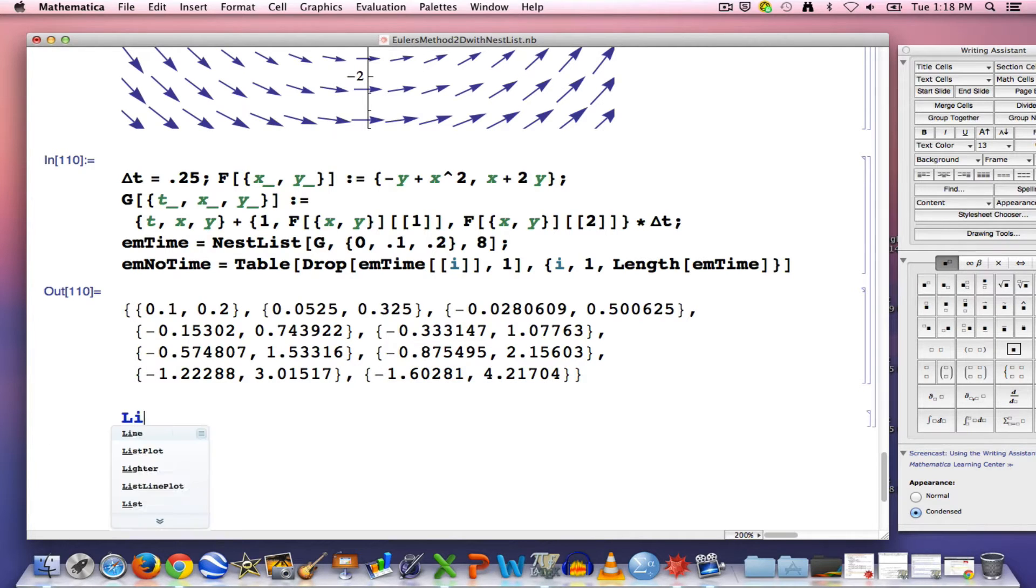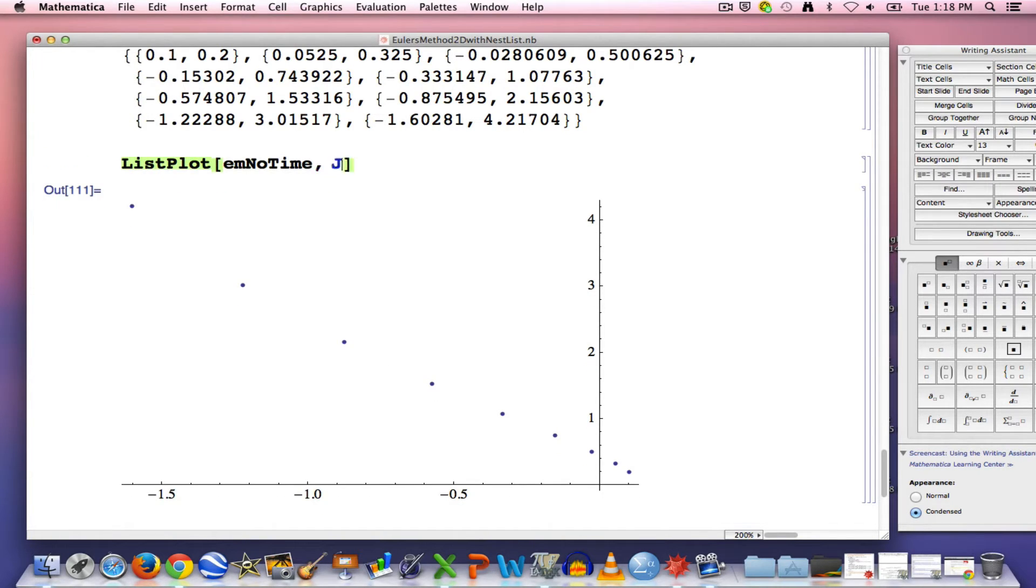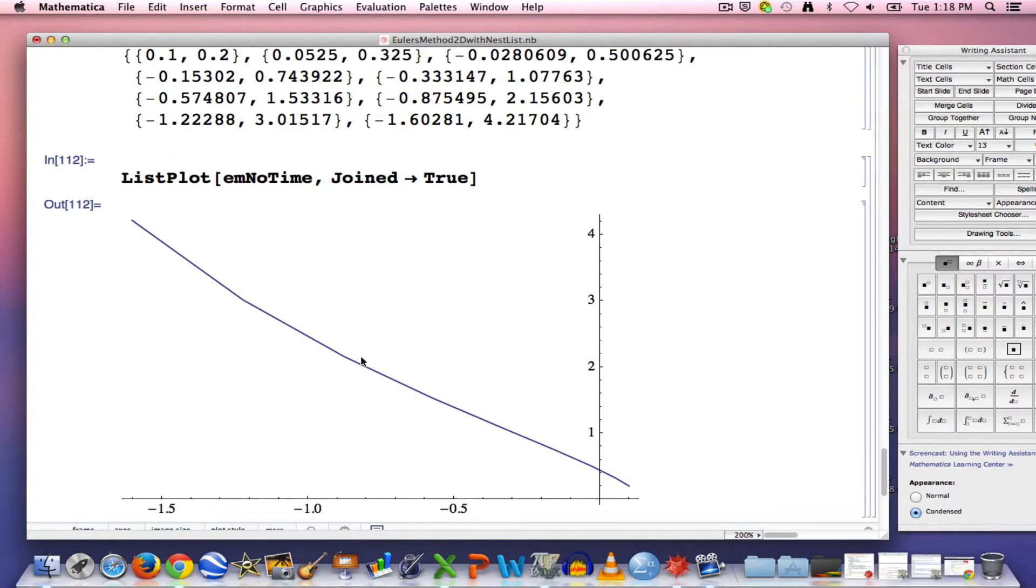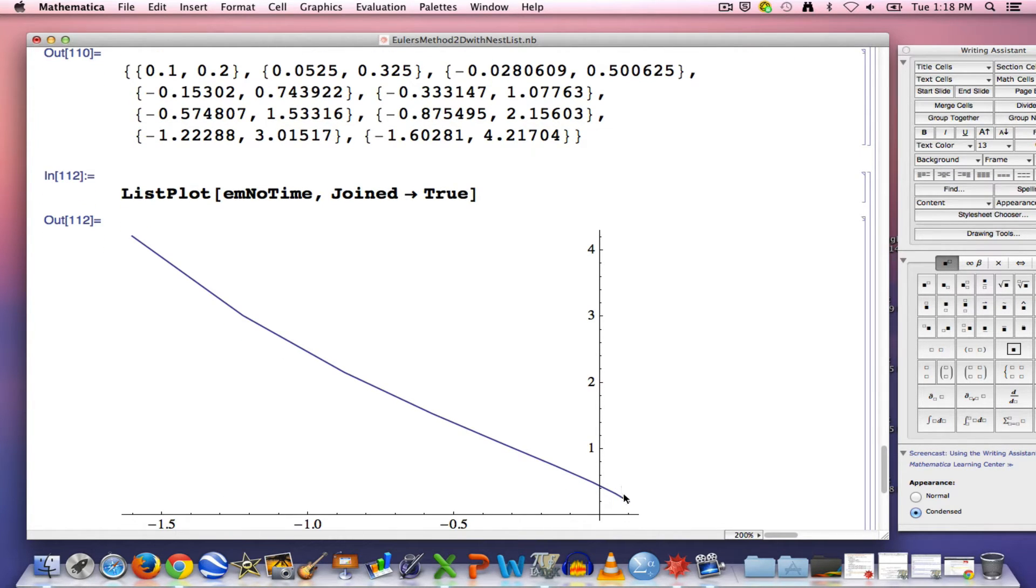You can plot this using listplot. By the way, this notation here, em no time, the em stands for Euler's method. I just picked this. This is the name of this list. So I can plot em no time with listplot by just typing in here like this, and I see a bunch of points that approximate the solution. I can join those points by adding an option, join, arrow, true, and then I can join those points with this polygonal curve that is an approximation to the true solution, starting at time equals 0 over here and ending at time equals 2 over here.